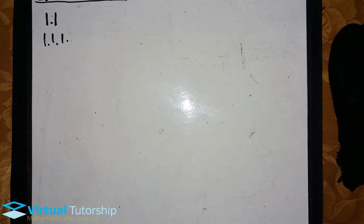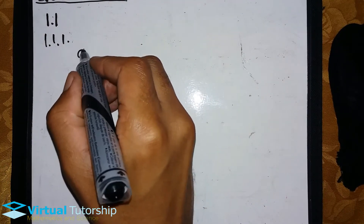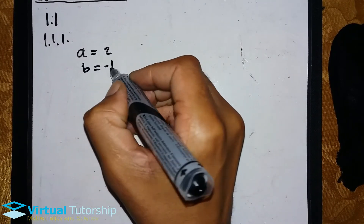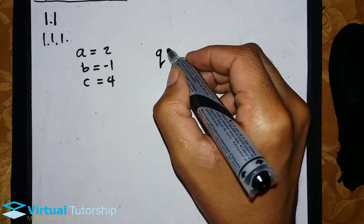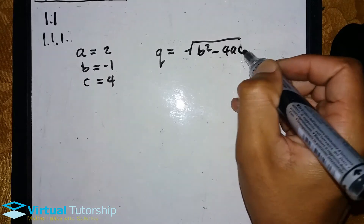Question 1.1 — we are given Q equal to the square root of b squared minus 4AC. So for question 1.1.1, determine the value of Q if A equals 2, B equals minus 1, and C equals minus 4. Leave your answer in simplest surd form. So A is equal to 2, B is equal to minus 1, C is equal to 4. Q is going to be equal to the square root of b squared minus 4AC.